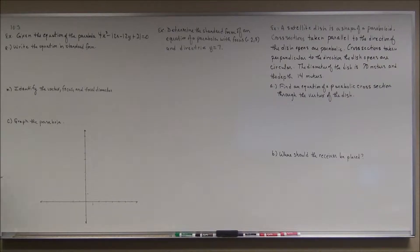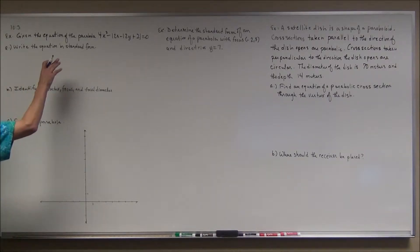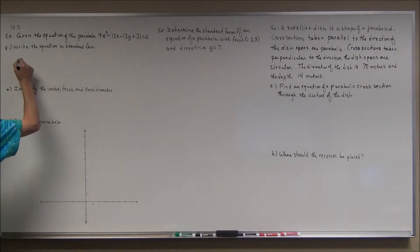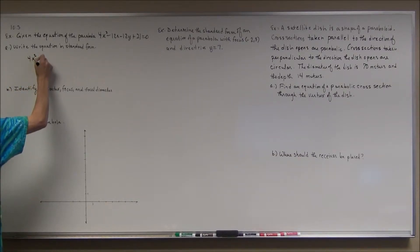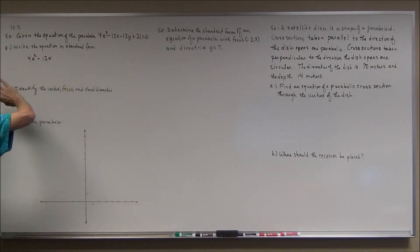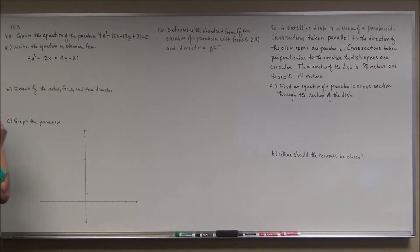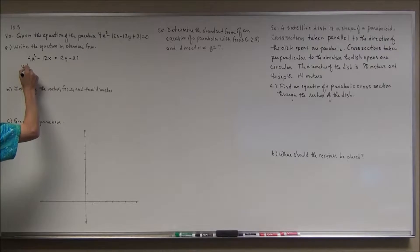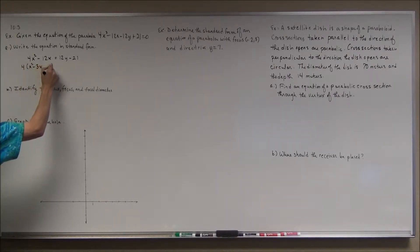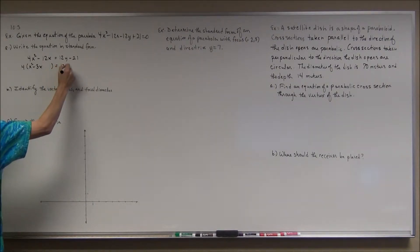The first thing I'm going to do is recognize that x is the variable that's squared. I'll leave the two terms containing x on the left side of the equation, and move everything else to the right side, giving me positive 12y minus 21. Then I'll factor out a 4, giving me x² minus 3x on the left.